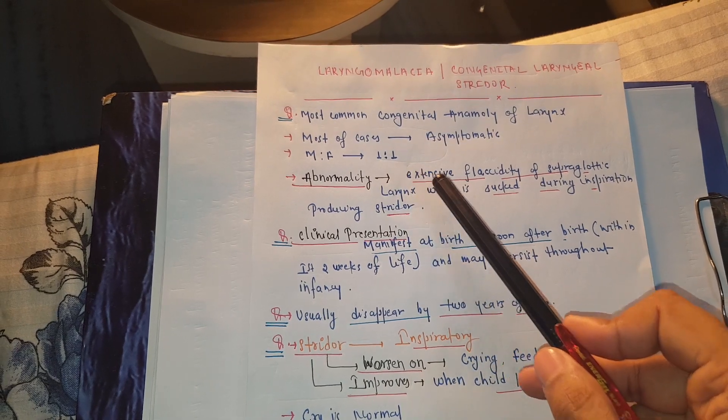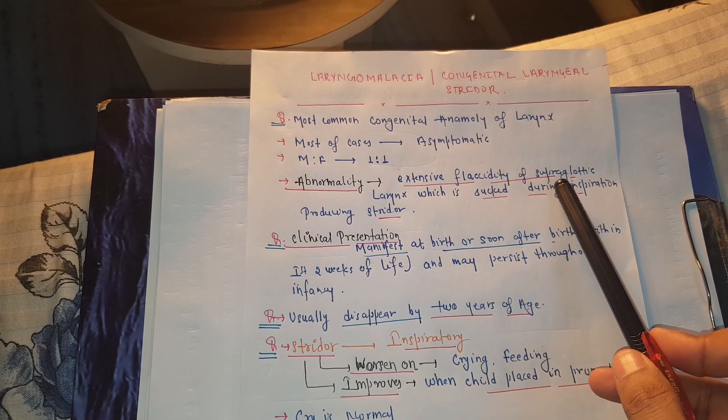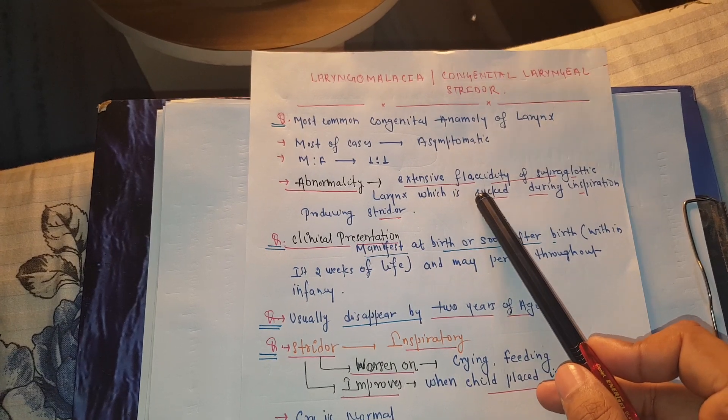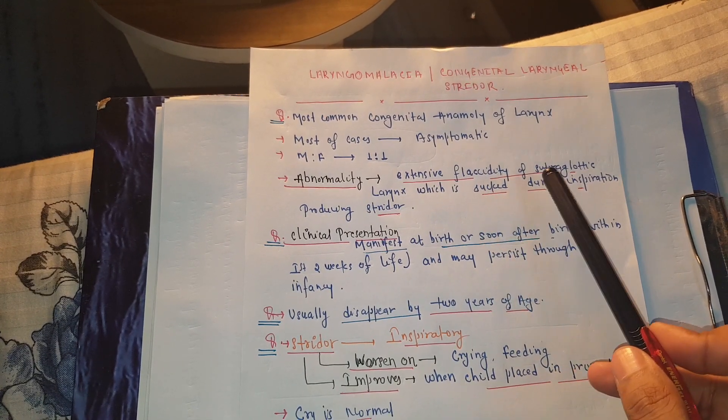The abnormality is in the supraglottic part of the larynx, where extensive flaccidity of the supraglottic larynx is present.